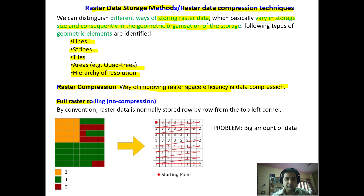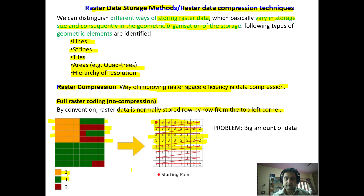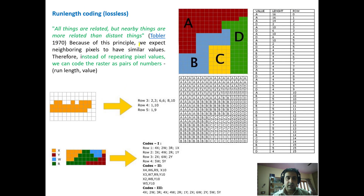The first type is full raster coding — there is no compression in this type. By convention, raster data is normally stored row by row from the top left corner. The data is stored in the first row, then the second, third, fourth, and fifth rows. No storage efficiency is achieved this way. In the raster tile format, each row is stored sequentially with values assigned a legend, but it results in a big amount of data with practically no compression.